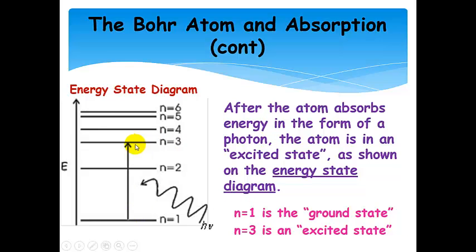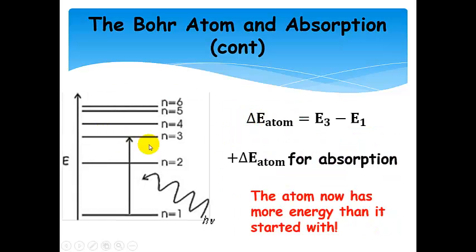The atom has more energy than it started with because it absorbed a photon. E final minus E initial — the atom started in n equals 1 and went to n equals 3, so E final minus E initial gives the change in energy of the atom, which comes out to be positive because a photon was absorbed. We went from a lower energy state to a higher energy state, so the atom now has more energy than it started with.